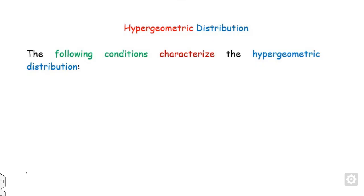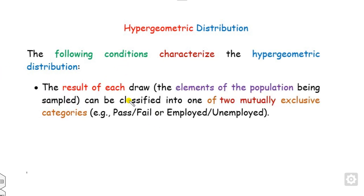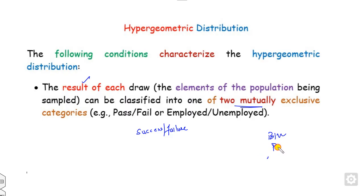So what are the basic assumptions that need to be satisfied before applying this hypergeometric distribution? Basically there are two conditions. One is that whatever result you have obtained after performing an experiment is classified into only two mutually exclusive outcomes — that is either success or failure. This assumption also needs to be satisfied by all other distributions such as the binomial distribution, Poisson distribution, geometric distribution, and so on, as we already discussed in our last lectures.